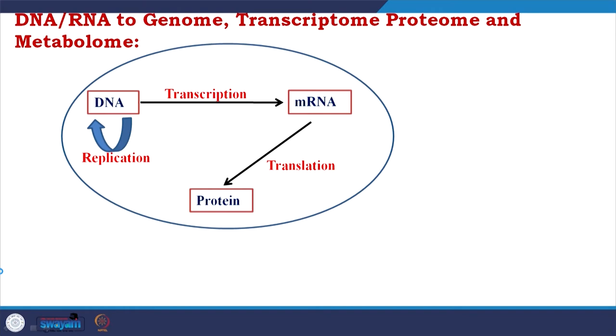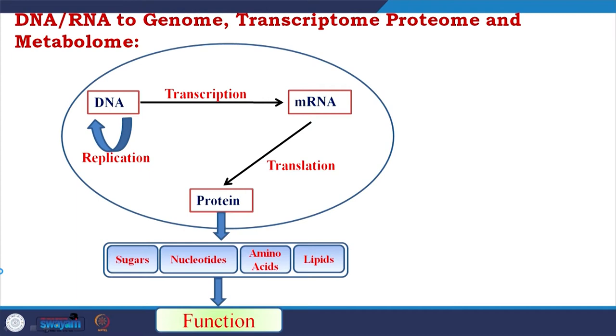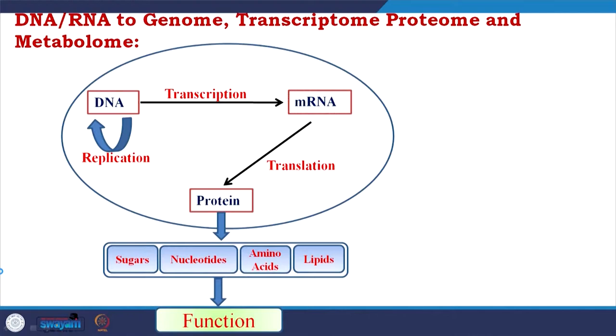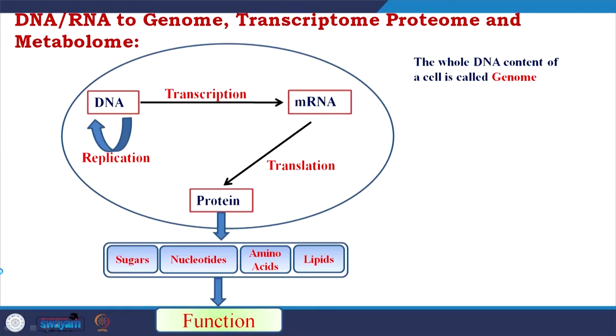The central dogma is about the relationship of DNA, RNA — especially mRNA — and protein. DNA self-replicates to form DNA; DNA through transcription makes mRNA; and mRNA through translation makes protein. These three macromolecules are interconnected, but in the cell, in an organism, function is carried out majorly by protein, through molecules like sugars, nucleotides, amino acids, and lipids, which form further small molecules that decide the function of the cell.